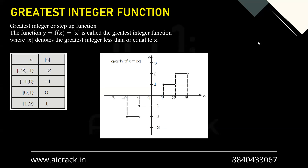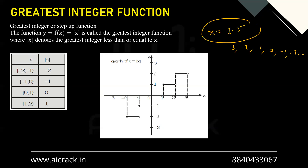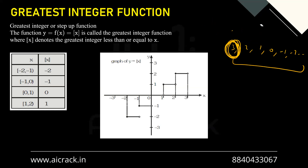Given any real input to this function, it returns an integer which is the greatest among all integers that are less than the input. For example, if x = 3.5, the integers lesser than 3.5 are 3, 2, 1, 0, -1, -2, and so on till minus infinity. It would return 3, which is the greatest among all integers less than 3.5.